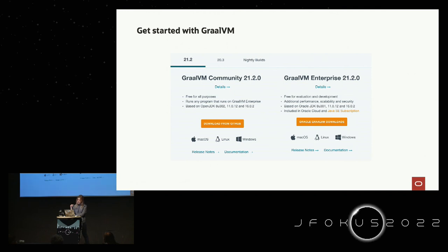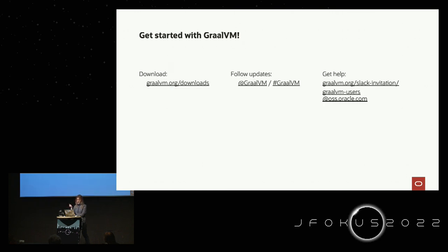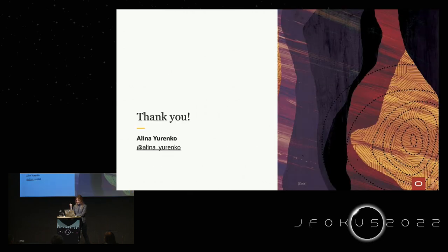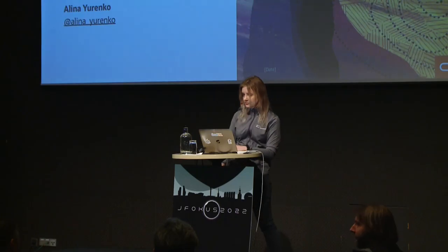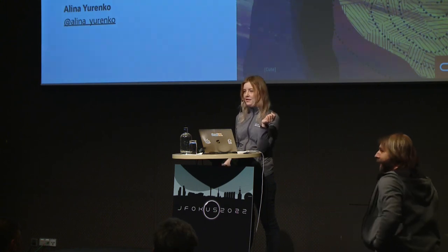If you want to get started, we have two versions of GraalVM — Community Edition and Enterprise Edition — both available from graalvm.org, or you can use it on Oracle Cloud as well. For updates, we have a Twitter account, a very active Slack workspace with around 2,000 people, and a mailing list if you prefer email. Thank you so much.